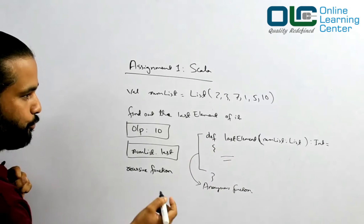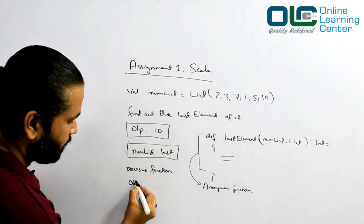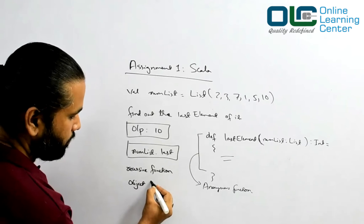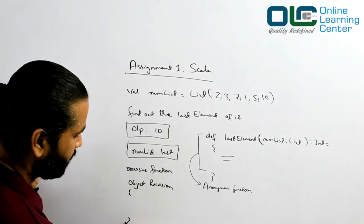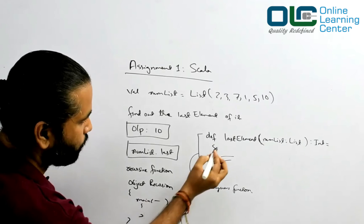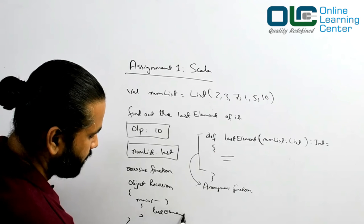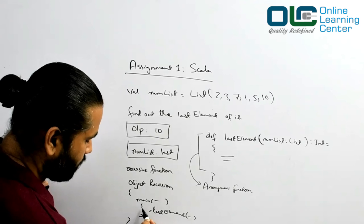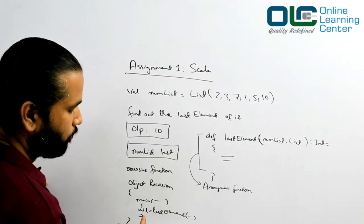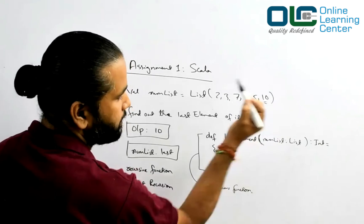What you should do then is you should have a main method - say, a main class object recursion with a main method here, and you should call this lastElement that should return you back the number and print this number. When you print this number, you should get 10 as an output.